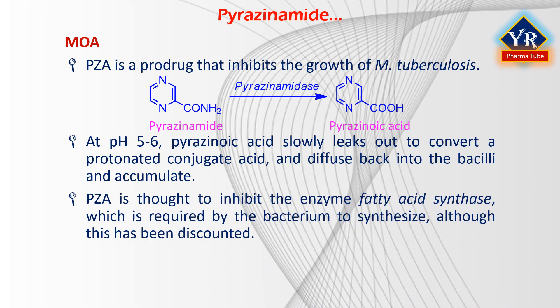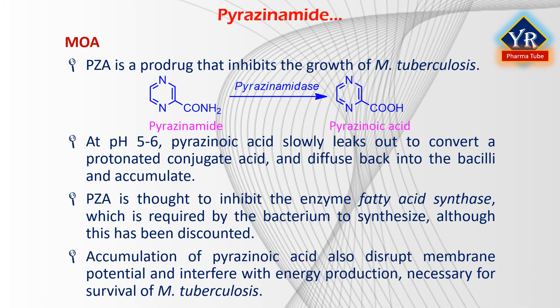Pyrazinoic acid was thought to inhibit the enzyme fatty acid synthase, which is required by the bacterium to synthesize fatty acids, although this has been discounted. The accumulation of pyrazinoic acid was also suggested to disrupt membrane potential and interfere with energy production necessary for survival of mycobacterium tuberculosis at an acidic site of infection. However, since an acidic environment is not essential for pyrazinamide susceptibility and pyrazinamide treatment does not lead to intrabacterial acidification nor rapid disruption of membrane potential, this model has also been discounted.